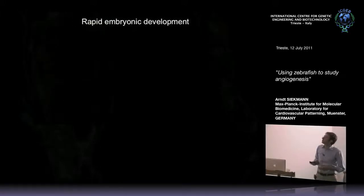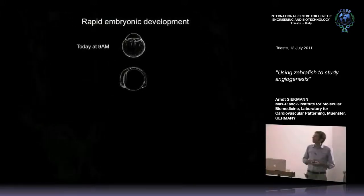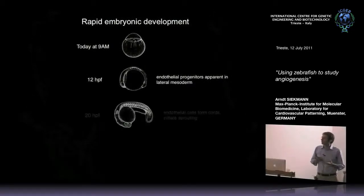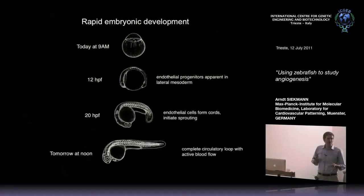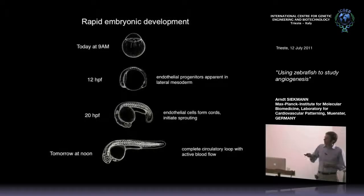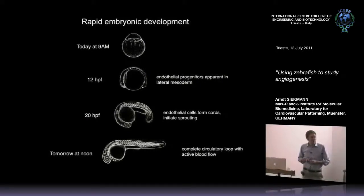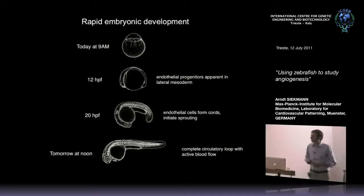Regarding rapid embryonic development - for those who work with mice and wonder what happens in the first 48 hours - within just 30 hours from a single egg, you already have an animal that really looks like a fish with a beating heart, blood being pumped through the embryo, and an established circulatory loop. This is extremely rapid and convenient for screening factors that might influence angiogenesis.